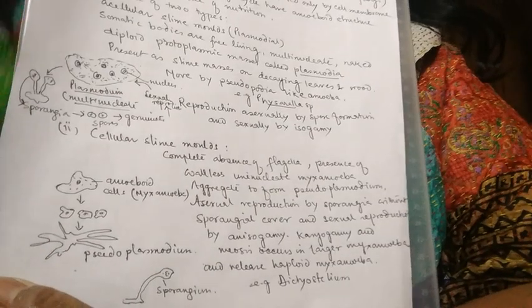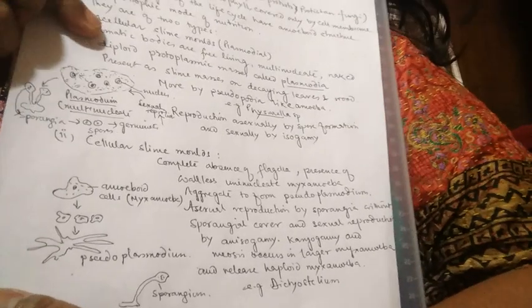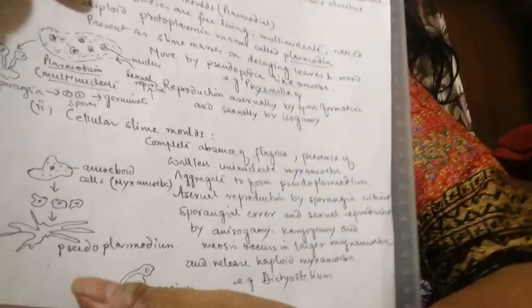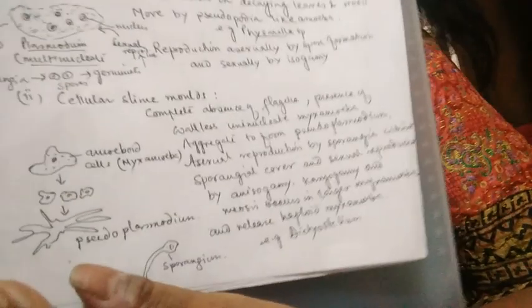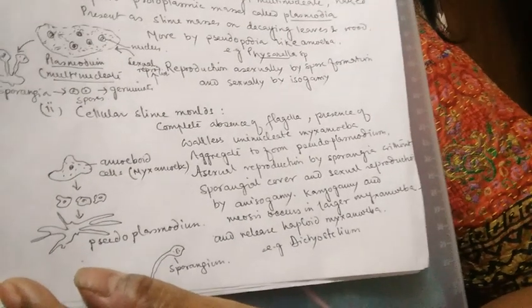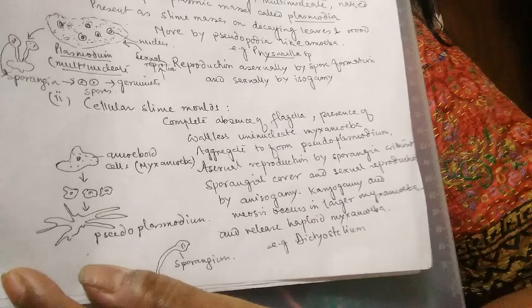That covers slime molds. Examples of slime molds include Physarella and Dictyostelium.